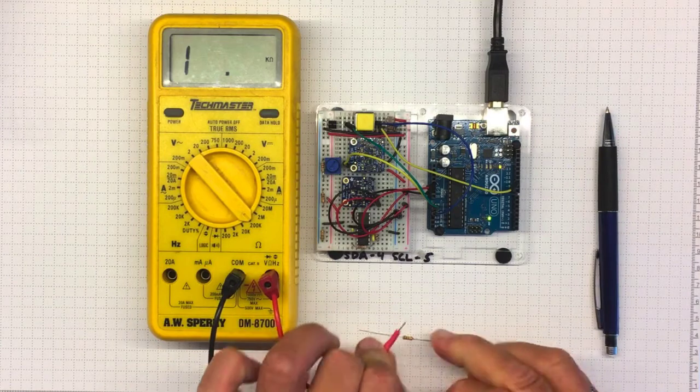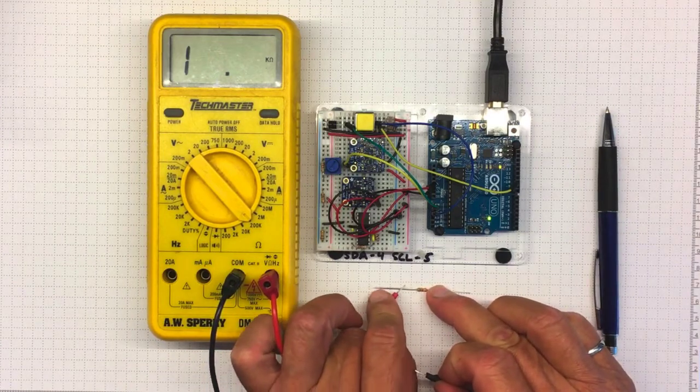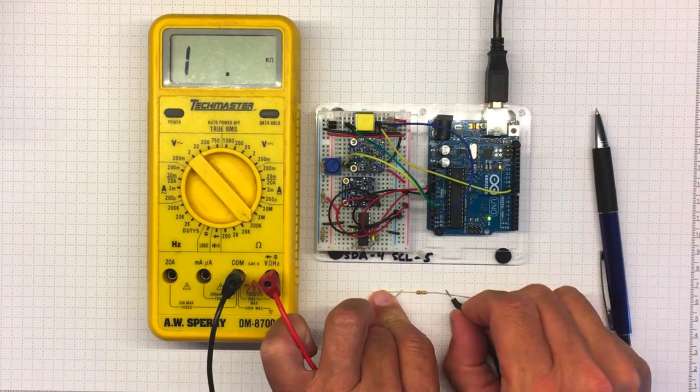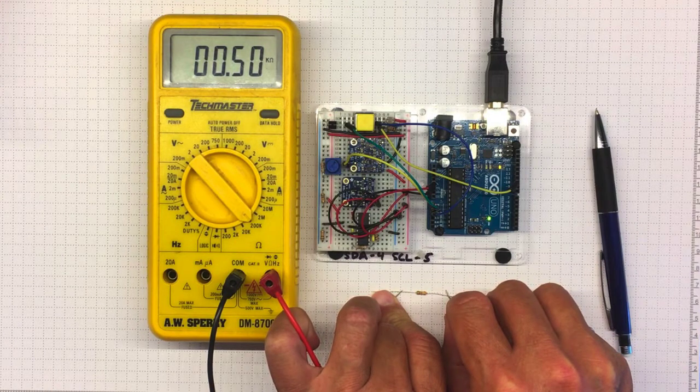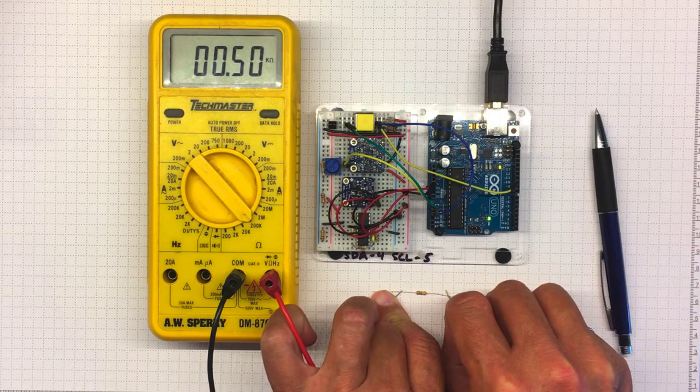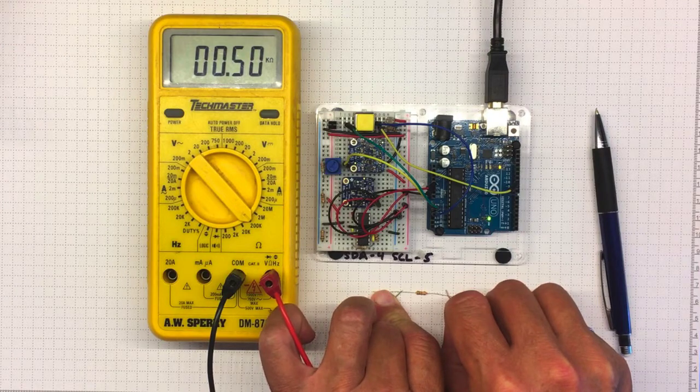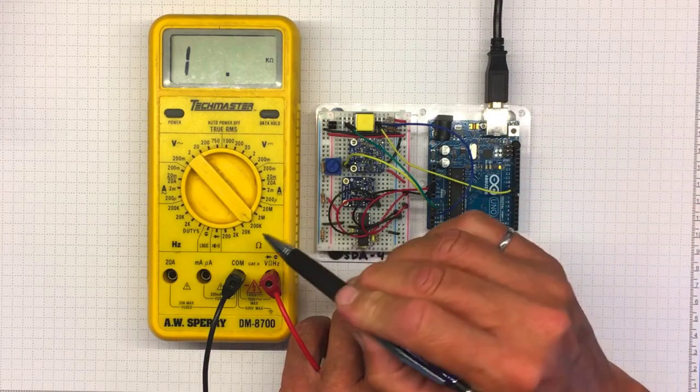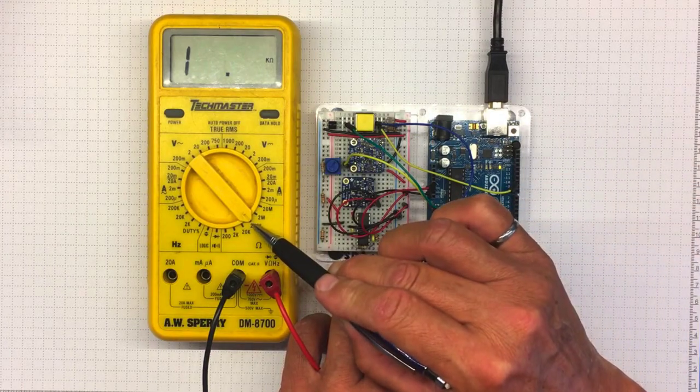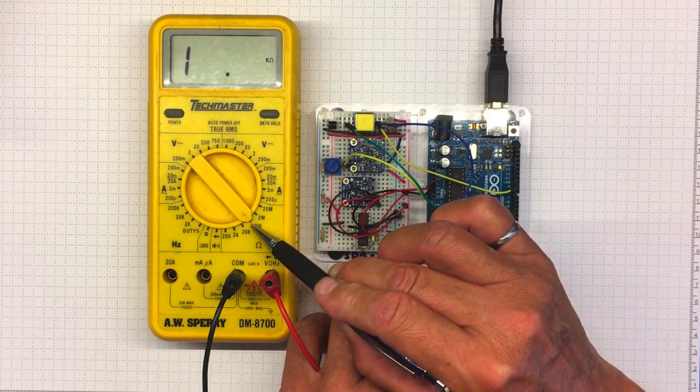If I touch the leads to both sides of this resistor, what do I get? I get about 0.5 kilo ohms. It's got a K up there at the end of the display. Now let's have a look. I was on the 200K measurement range.